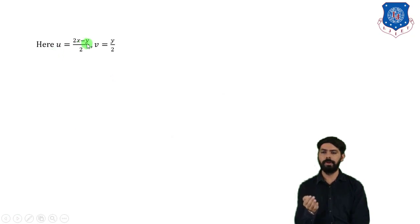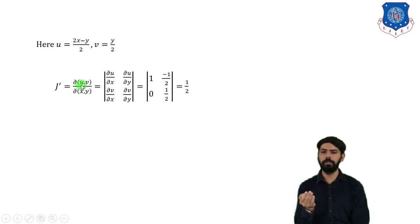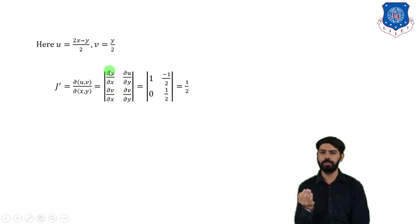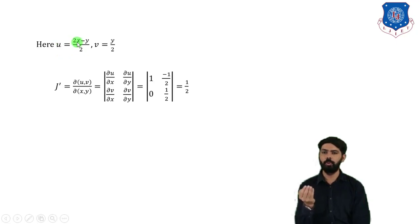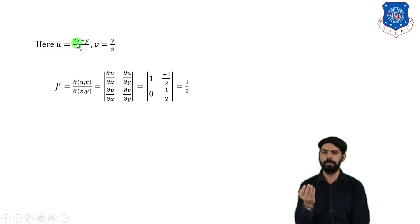Since u = (2x − y)/2 and v = y/2, we find J' = ∂(u,v)/∂(x,y). First, ∂u/∂x: partial differentiation of u with respect to x gives 2/2 = 1. Then ∂u/∂y: since x is constant, the derivative of −y gives −1/2.